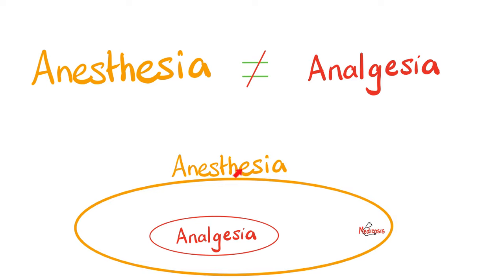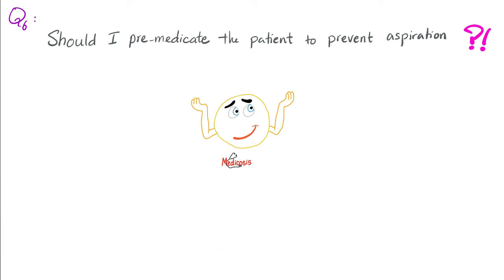Every time you have anesthesia, like general anesthesia, you will have analgesia with it. But I can give you a pain medication — that will make you analgesic, no pain. However, you're still conscious. So just because you have analgesia doesn't necessarily mean you have anesthesia.